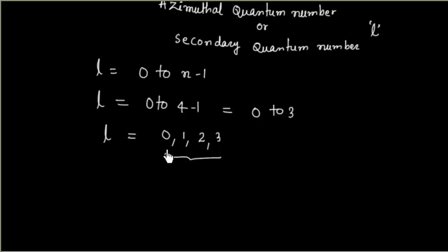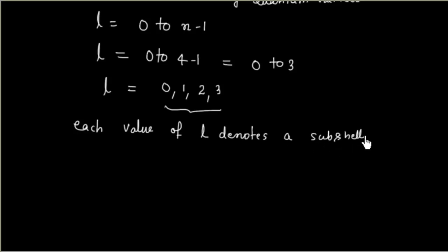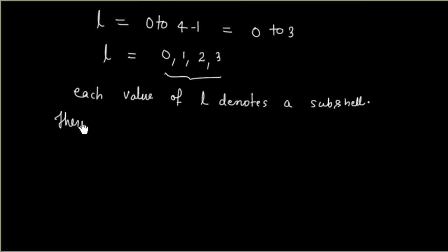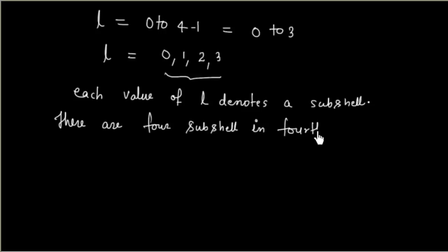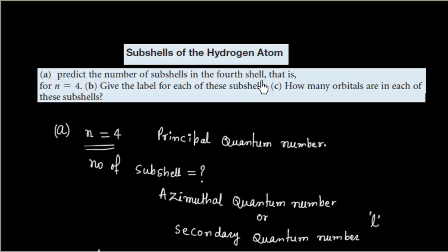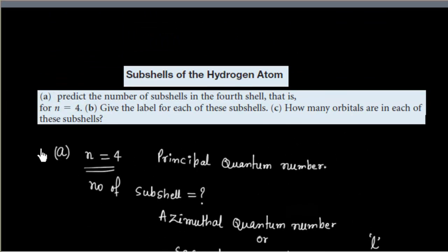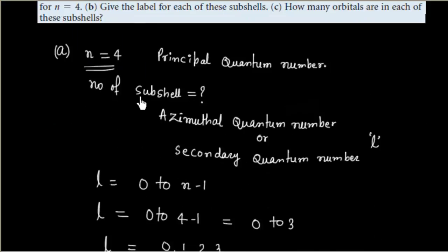Each value of l denotes a subcell. So basically there are 4 subcells for n equal to 4. Part B says: give the level designation for each of the subcells. So we have l equal to 0, 1, 2, and 3.